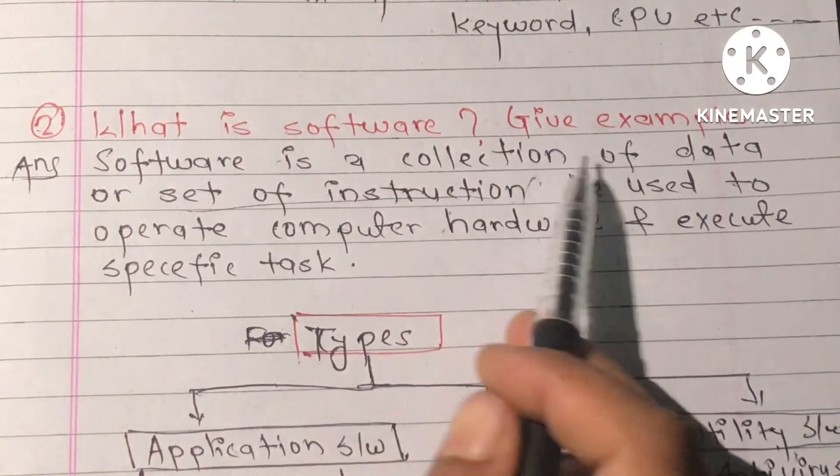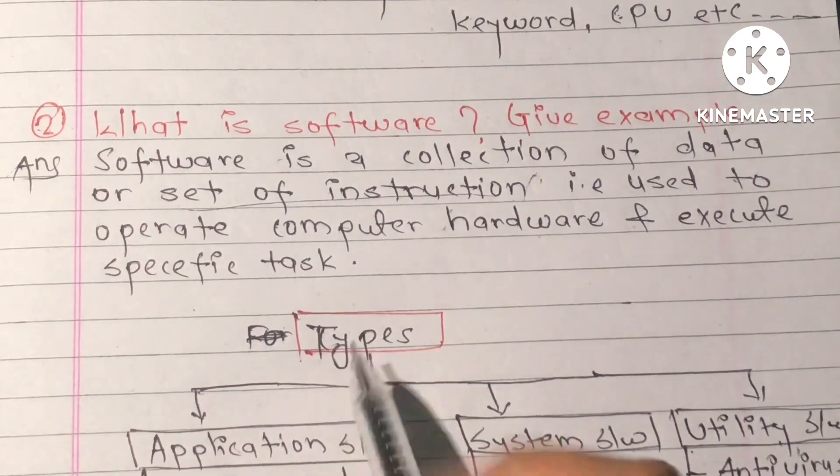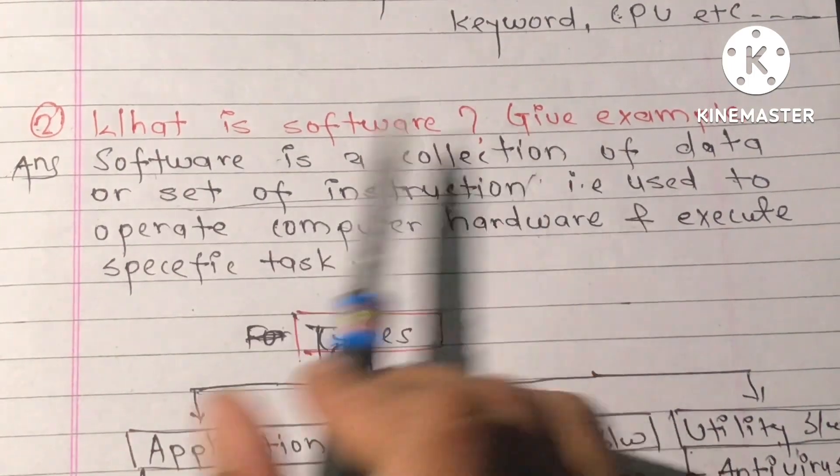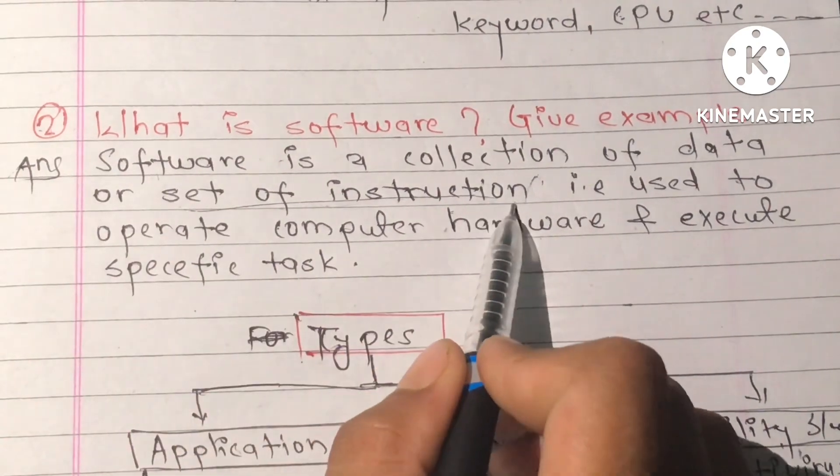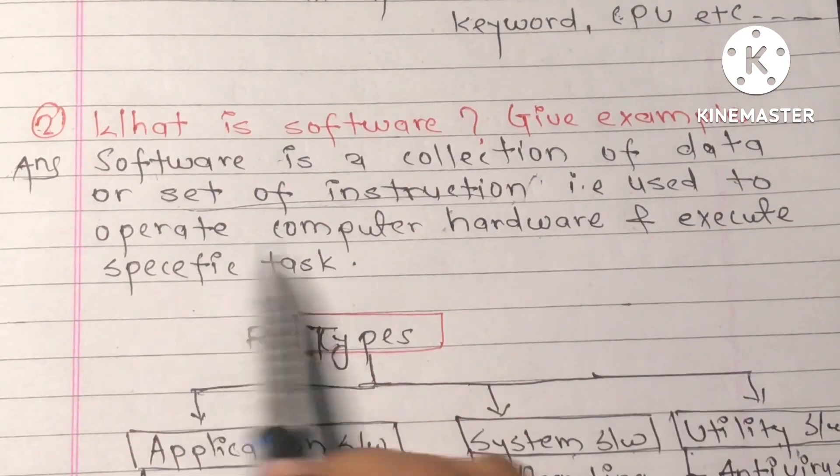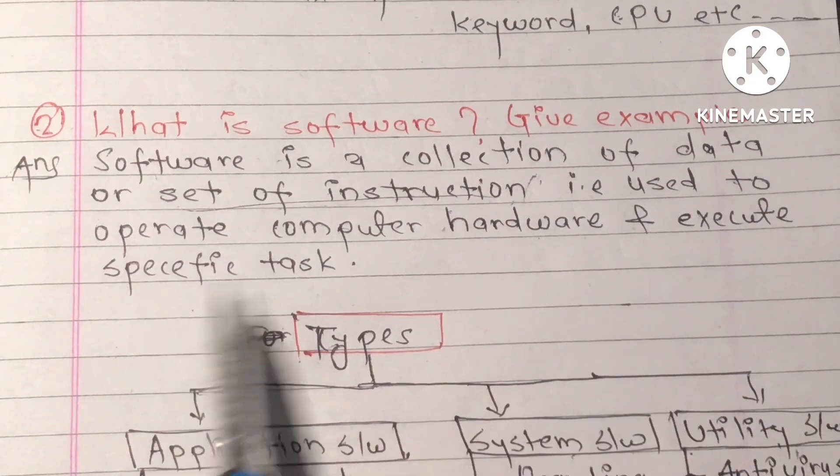What is software? Give example. Software is a collection of data or set of instructions that is used to operate computer hardware and execute specific tasks.